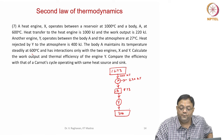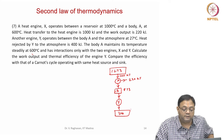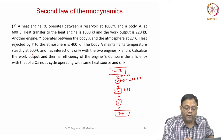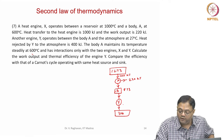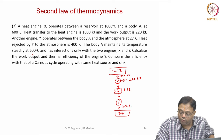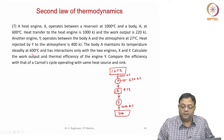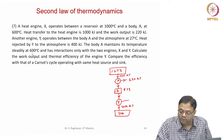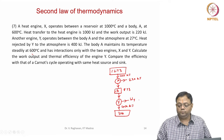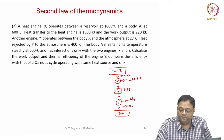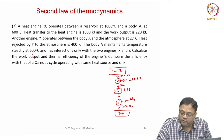Engine Y is rejecting heat to the atmosphere. Heat rejected by Y to the atmosphere is 400 kilojoules. I will define WY as the work output of Y, QCX as the heat rejected by X, and QHY as the heat input to Y.